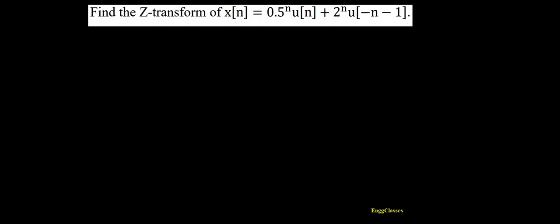Hello everyone, welcome to NG Classes YouTube channel. In this video lecture, we'll consider finding the Z-transform of x(n), which is equal to 0.5 to the power n times u(n), plus 2 to the power n times u(-n-1). How do I find the Z-transform for this?